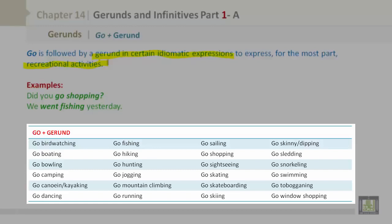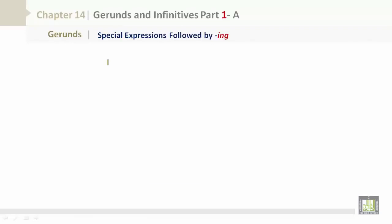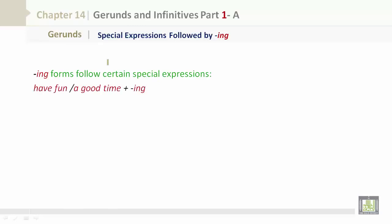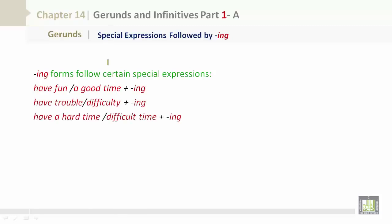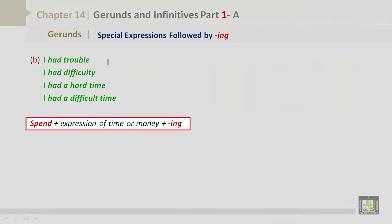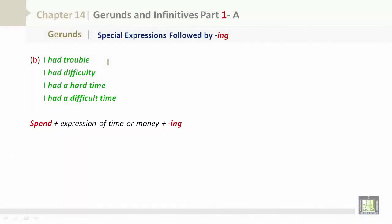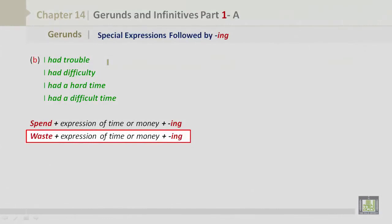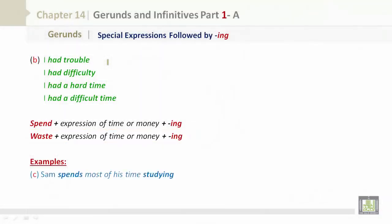More go plus gerund expressions: go shopping, go sightseeing, go skating, go skateboarding, go skiing, go sledding, go snorkeling, go swimming, go window shopping. Special expressions followed by -ing include: have fun or a good time plus -ing, have trouble or have difficulty plus -ing, have a hard time or difficult time plus -ing. Also, spend plus an expression of time or money plus -ing, and waste plus an expression of time or money plus -ing. For example: 'Sam spends most of his time studying.' 'I waste a lot of time watching TV.'